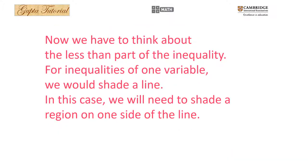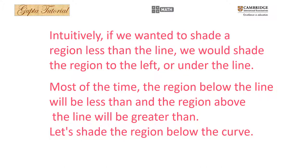Now we have to think about the less-than part of the inequality. For inequalities in one variable, we shade a line. In this case, we need to shade a region on one side of the line. Intuitively, if we want to shade a region less than the line, we shade the region to the left, under, or below the line. Most of the time, the region below the line is less than and the region above the line is greater than. Let's shade the region below the line.